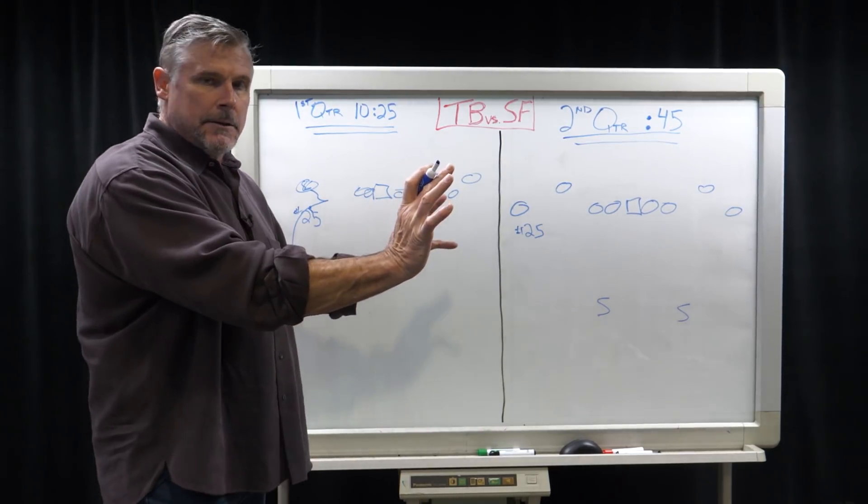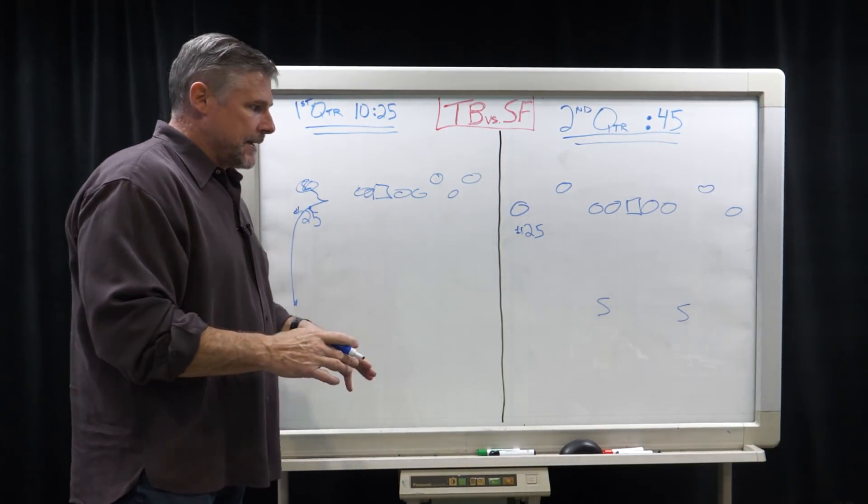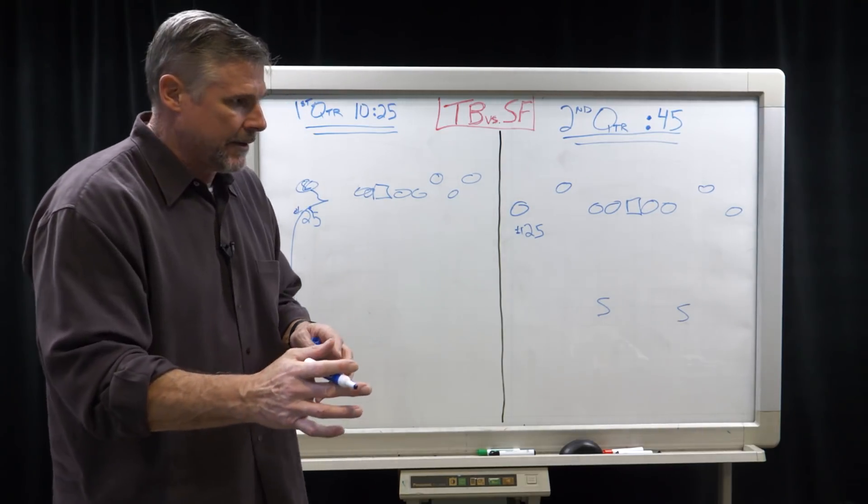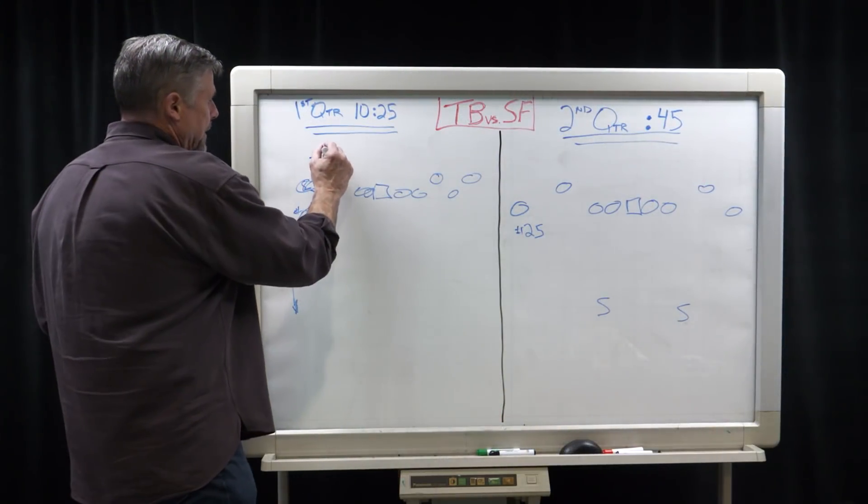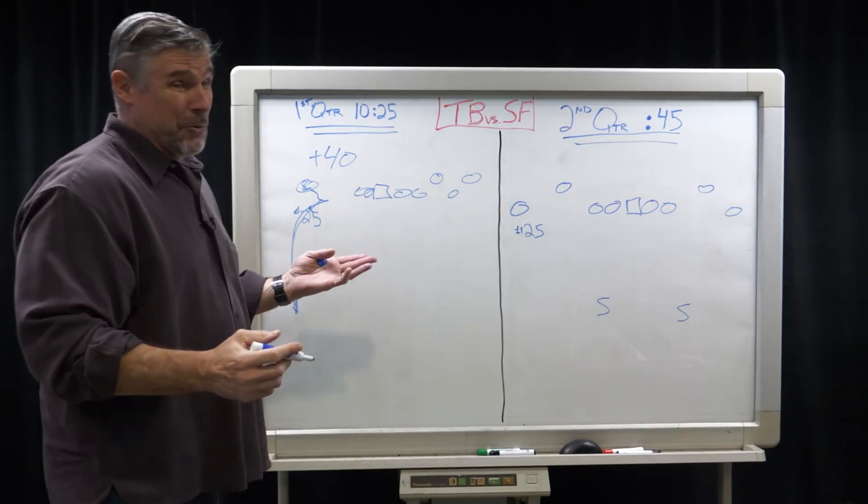Evans kind of stuck him inside and he bit on the fake. Then he was able to get outside along the sidelines, gets the throw and goes for about 40 yards. I was like, wow, that did not look like Richard Sherman.